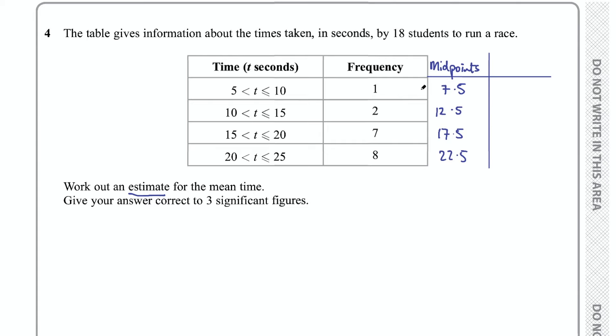And again, what that's saying is we're going to estimate that's how long each person took. So this one person in this first interval, we're going to estimate that he took 7.5 seconds. Now we don't know that that's how long he took - he might have ran the race in 6 seconds or 10 seconds - but that's our best guess, the midpoint there. So that's why it's an estimate.